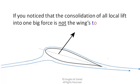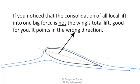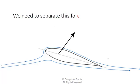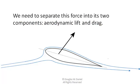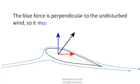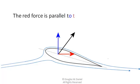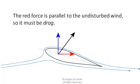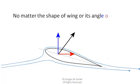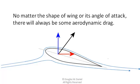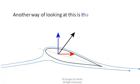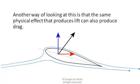If you notice that the consolidation of all local lift into one big force is not the wing's total lift — good for you. It points in the wrong direction. We need to separate this force into its two components: aerodynamic lift and drag. The blue force is perpendicular to the undisturbed wind, so it must be lift. The red force is parallel to the undisturbed wind, so it must be drag. No matter the shape of the wing or its angle of attack, there will always be some aerodynamic drag. Another way of looking at this is that the same physical effect that produces lift can also produce drag.